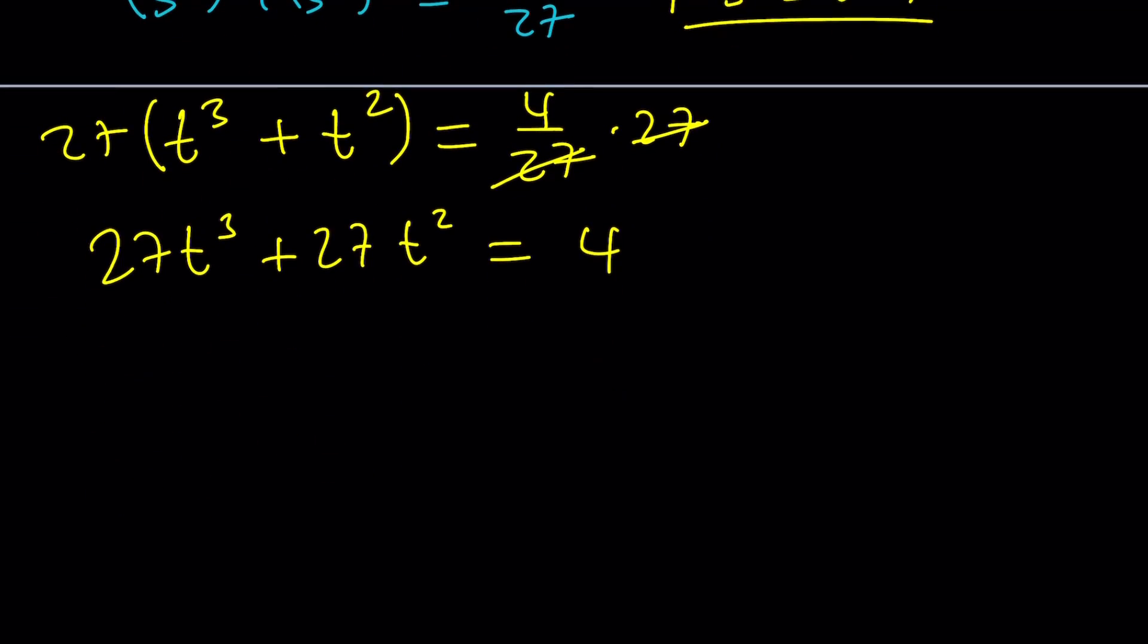So let's get rid of the fraction. And 27 is nice because it's 3 to the third power. So we'll take advantage of that. Let's multiply both sides by 27. 27 cancels out. We're going to distribute: 27t cubed plus 27t squared equals 4. Awesome. As if this made it easy, right? It actually did, but we're going to use our awesome method again one more time, which is substitution.